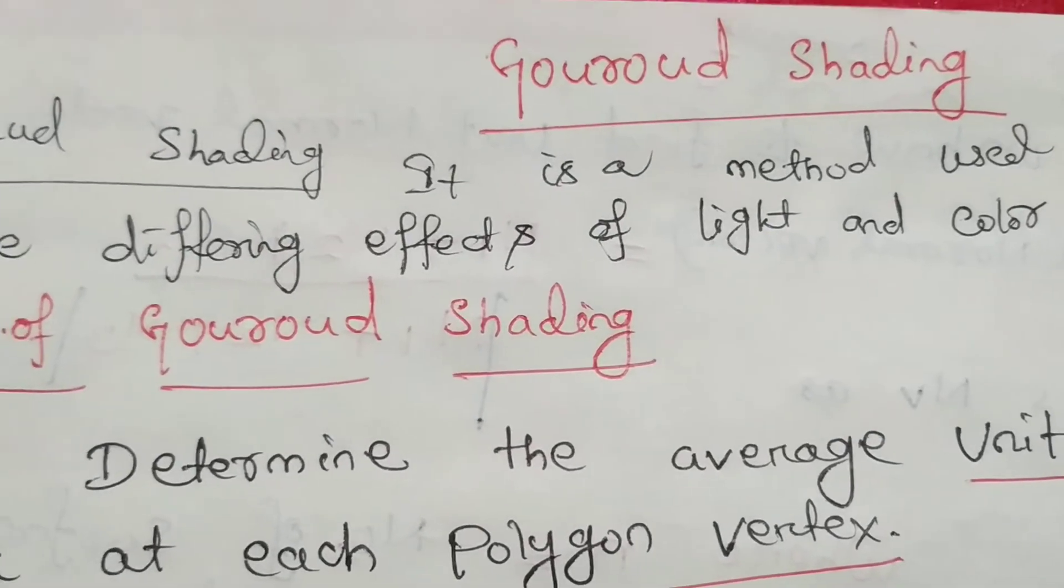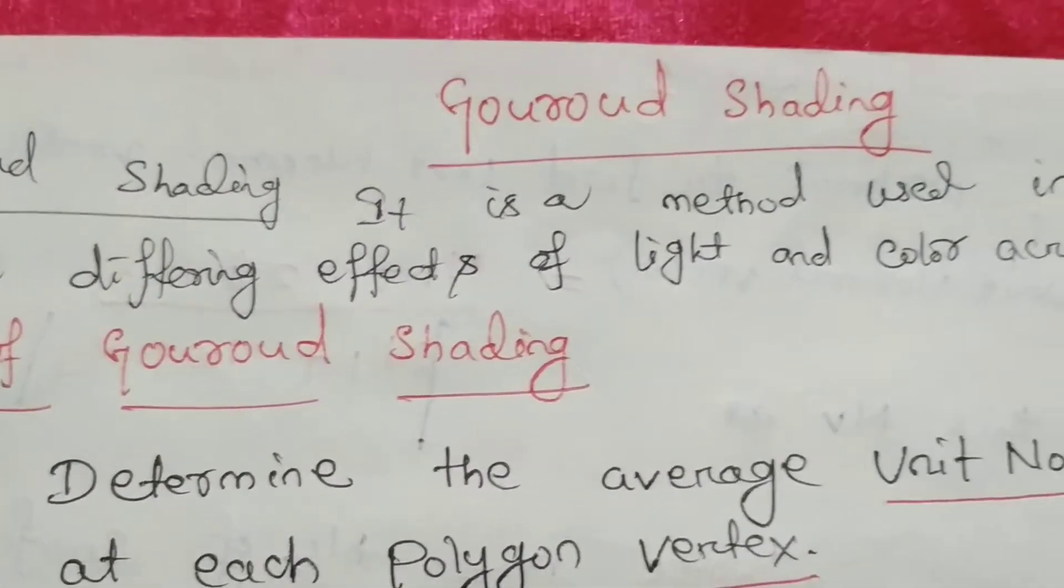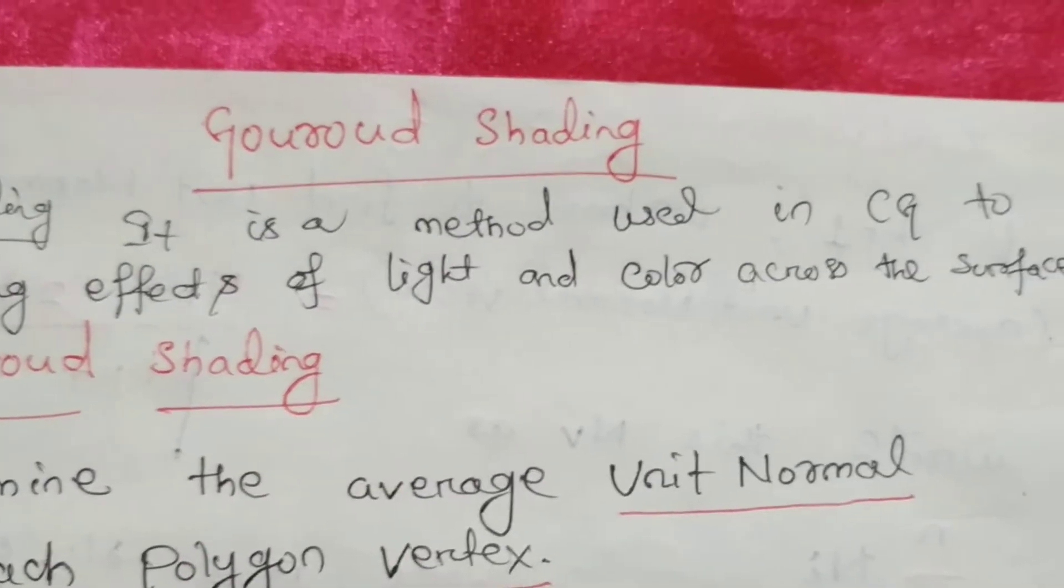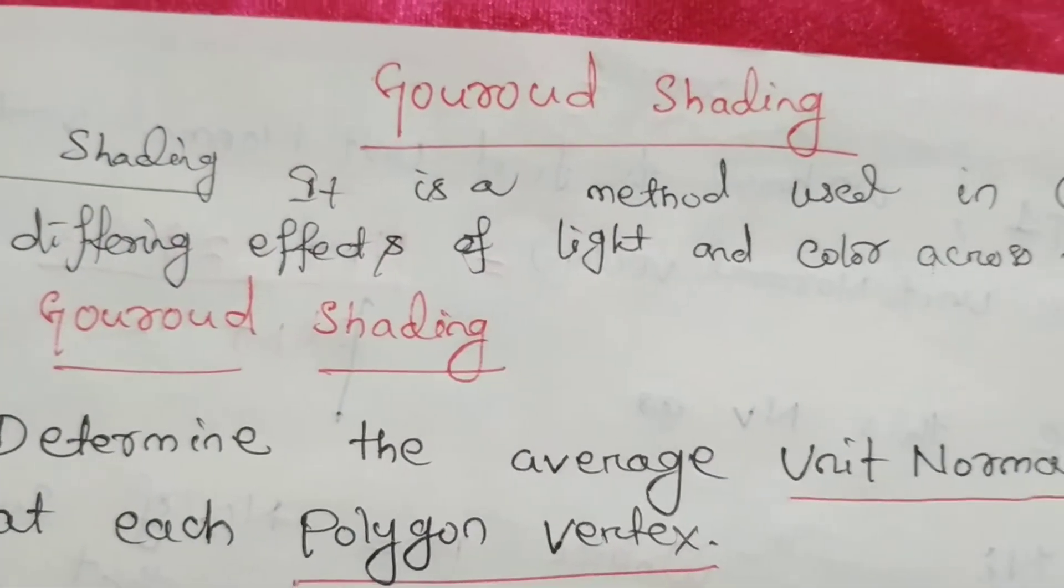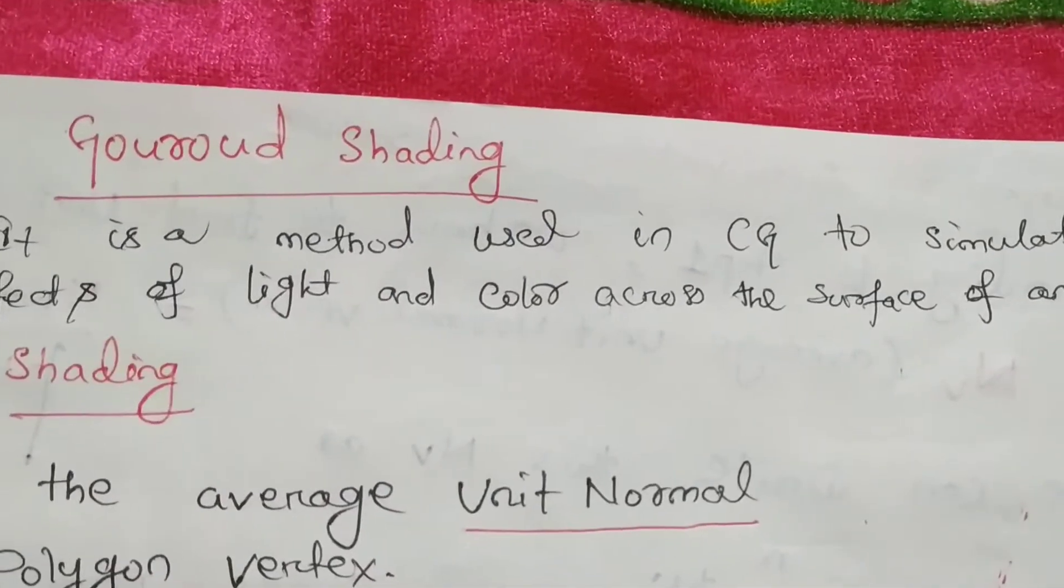What's up everyone? Today we will study Gouraud Shading. What is Gouraud Shading? Gouraud Shading is a method used in computer graphics to simulate the differing effect of light and color across the surface of an object.